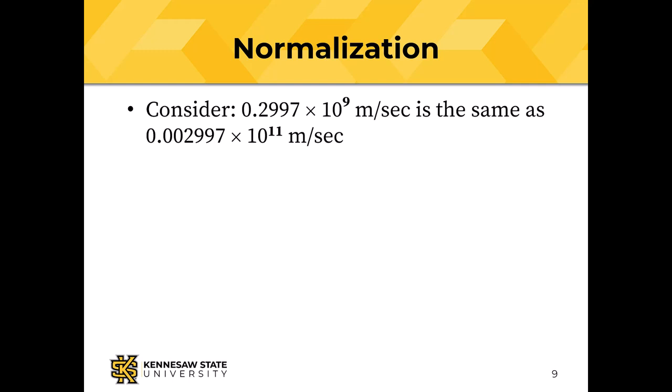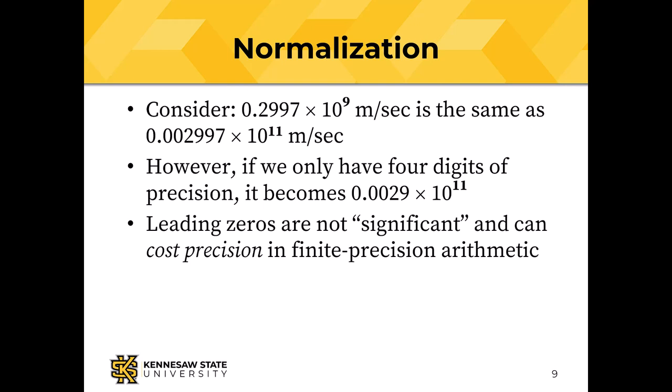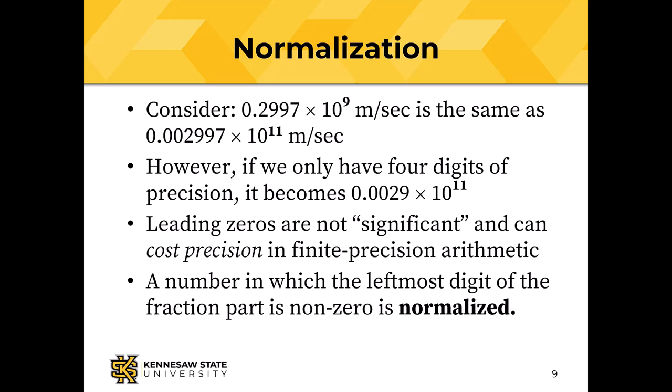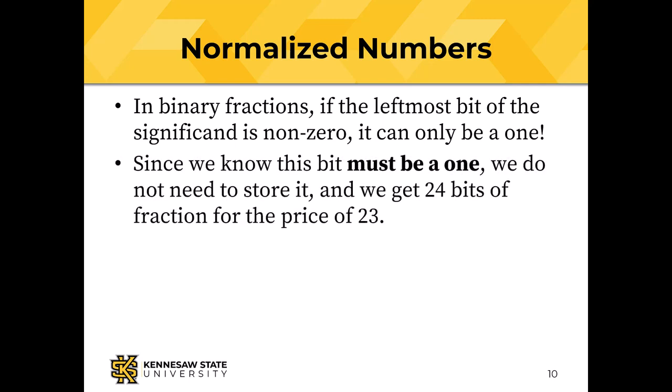Consider: 0.2997 times 10 to the 9th meters per second is the same as 0.002997 times 10 to the 11th meters per second. However, if we only have 4 digits of precision, that becomes 0.0029 times 10 to the 11th. Leading zeros in the fractional part of a number are not significant and can cost precision when using finite precision arithmetic. A number in which the leftmost digit of the fractional part is non-zero is called normalized. Numbers are normalized to keep the maximum number of significant digits. In binary fractions, if the leftmost bit of the significand is non-zero, it can only be a 1. Since we know that this bit must be a 1, we don't need to store it, and we can get 24 bits of significand for the price of 23.